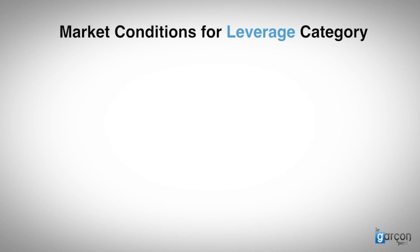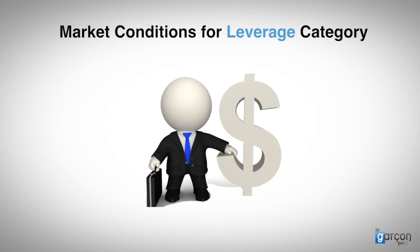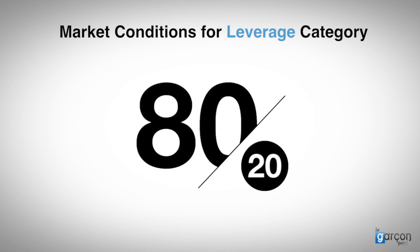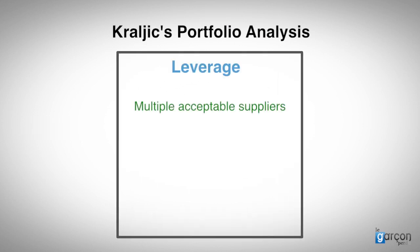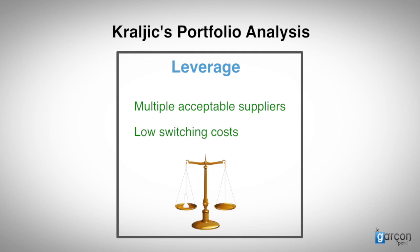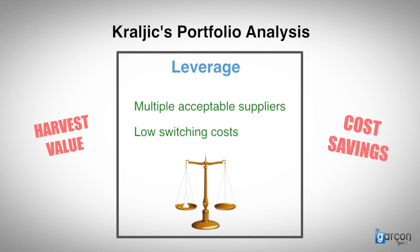Firstly, the category should have significance to the buyer, perhaps due to the value of spend. Do you remember the Pareto Principle? The leverage quadrant and the strategic quadrant normally represent more than 80% of the total spend. So these are higher value categories, and the market in the leverage quadrant is usually relatively simple, which means multiple acceptable suppliers — perhaps more than three or four — and relatively low switching costs. So when the buyer enjoys the balance of power, the strategies seek to harvest value from the market.